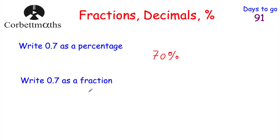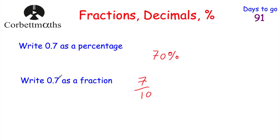Our next one is to change a decimal into a fraction. When I'm changing decimals into fractions, I read just what it is. 0.7 — that's 7 tenths, because the 7 is in the tenths column. So we just write that down: 7 tenths. And if that cancels down, you cancel it down, but 7 tenths can't be cancelled down, so 0.7 is just 7 tenths.